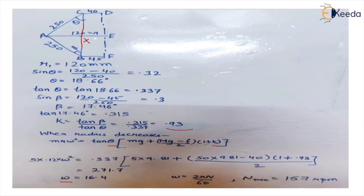We place all the given data into the formula and calculate omega squared. Taking the square root we get the value of omega as 16.4. Now using omega = 2πN / 60, we place the values and get N minimum, which is 157 rpm.